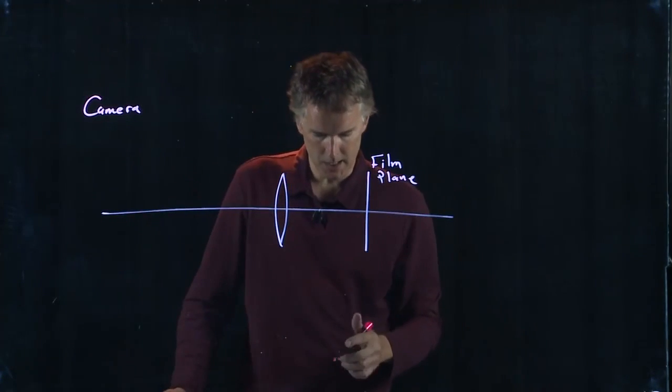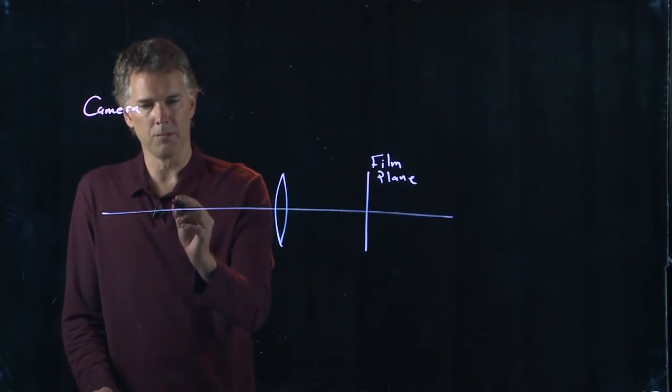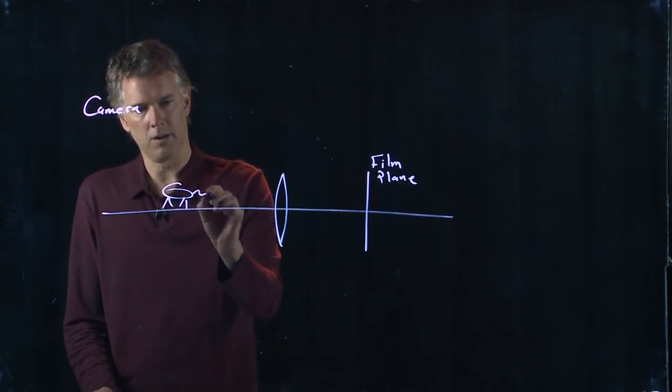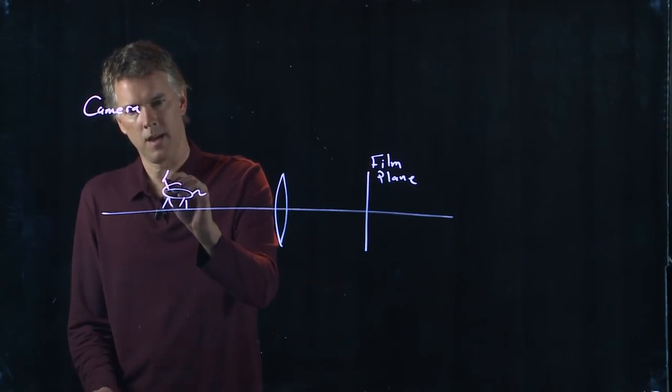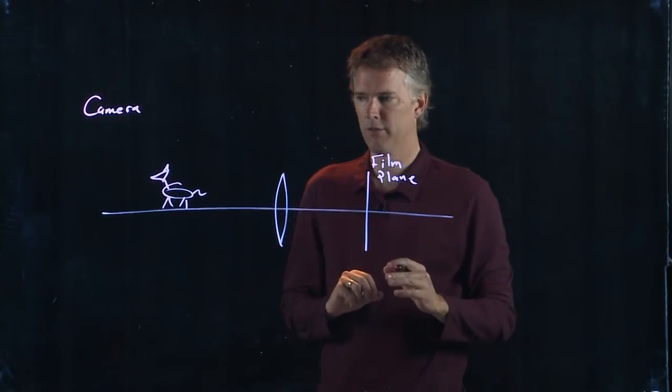And it says we got a dog that we are photographing, and it's in focus, but then it's going to start to move away. All right, so we draw a dog, here's our dog, happy dog. And we're taking a picture of this dog, and he's in focus.